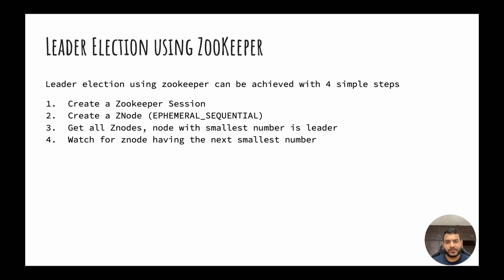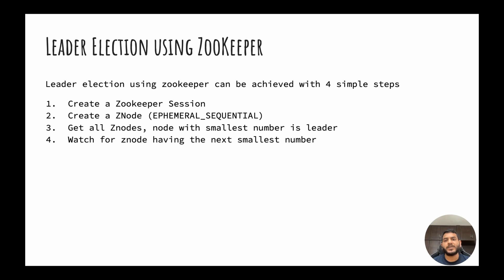The first step is creating a session with Zookeeper, and then using that session each node will create a Z node. This Z node will be created with some special flags. Zookeeper will assign a sequential number to all these nodes. The node with the smallest number becomes the leader. The third step is to fetch all the Z nodes in the system so you can see if you have the smallest number and can assume leadership. The fourth step handles edge cases where the leader might go down — you set up a watch on the next smallest number so that if the leader goes down, that node can take the leadership.